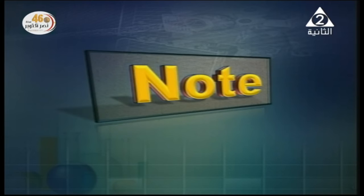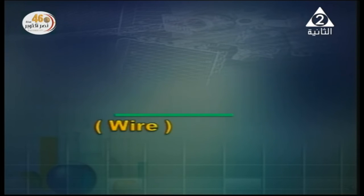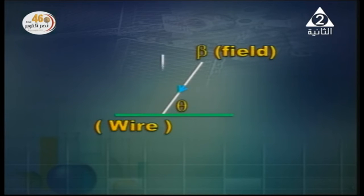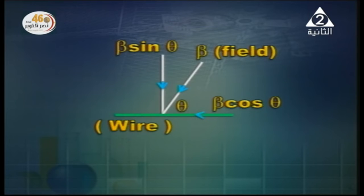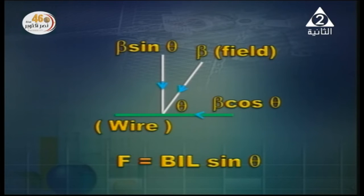When the wire makes an angle theta with the field, the expression used is F = B I L sin theta. We can resolve the field into two components: one parallel to the wire, B cos theta, which has no effect, and one perpendicular to the wire, B sin theta, which produces the force. So the general expression is F = B I L sin theta, where theta is the angle between field lines and the wire.